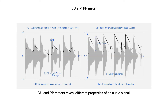A peak program meter displays peak values and it updates every 10 milliseconds. That means it shows discrete peaks — the so-called transients — as they occur. The difference between RMS level and volume peaks is called crest factor, which can be considerable depending on the type of music, speech or noise you monitor.